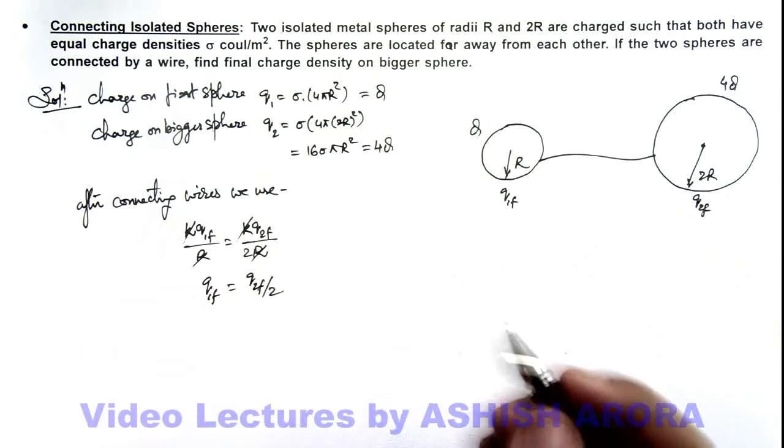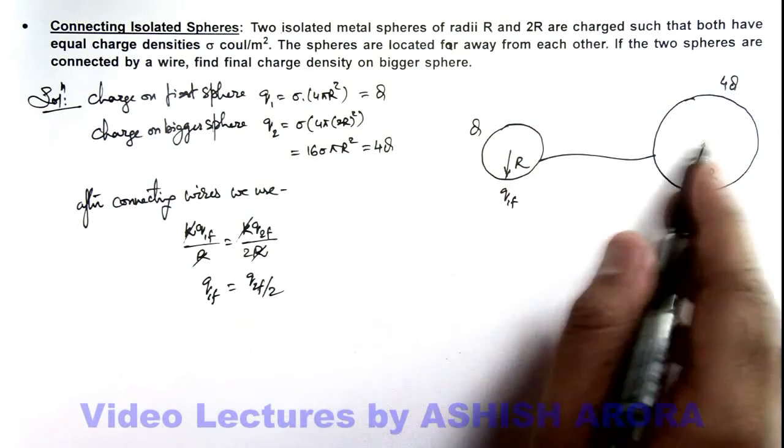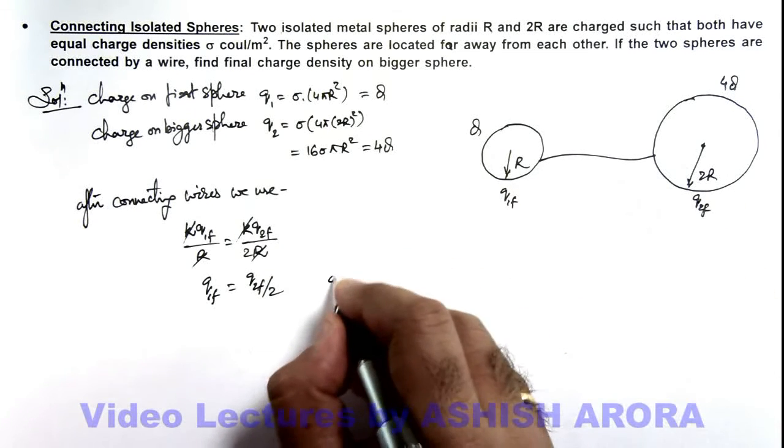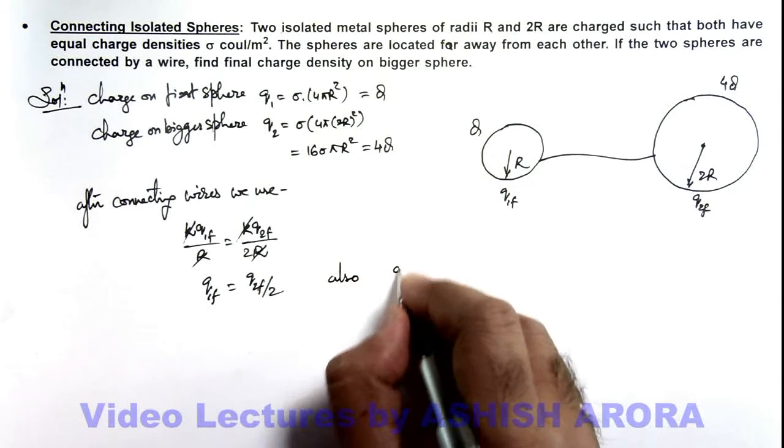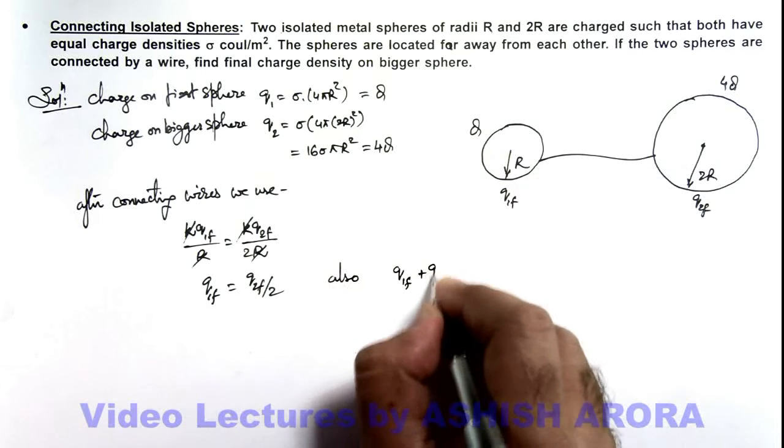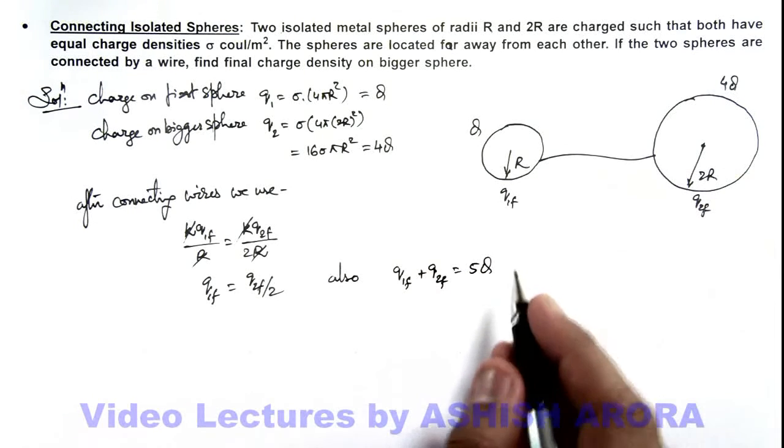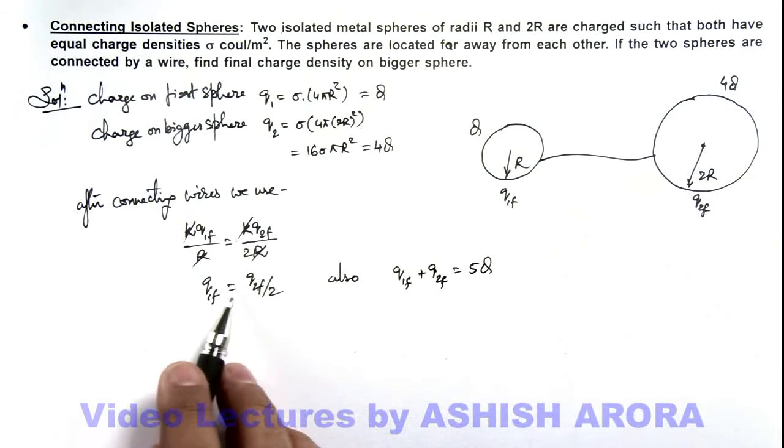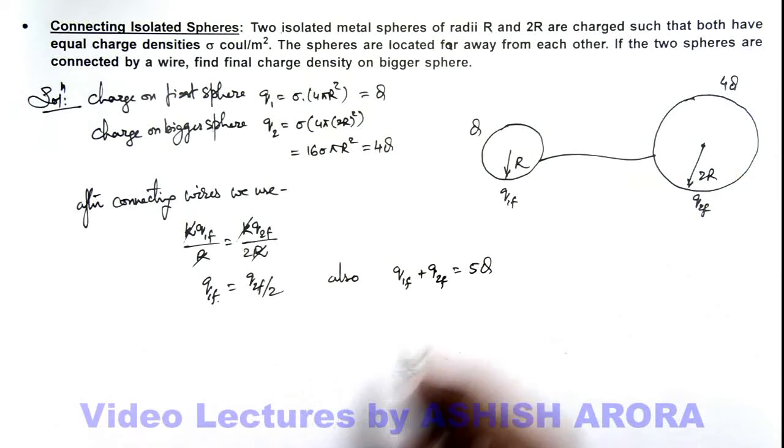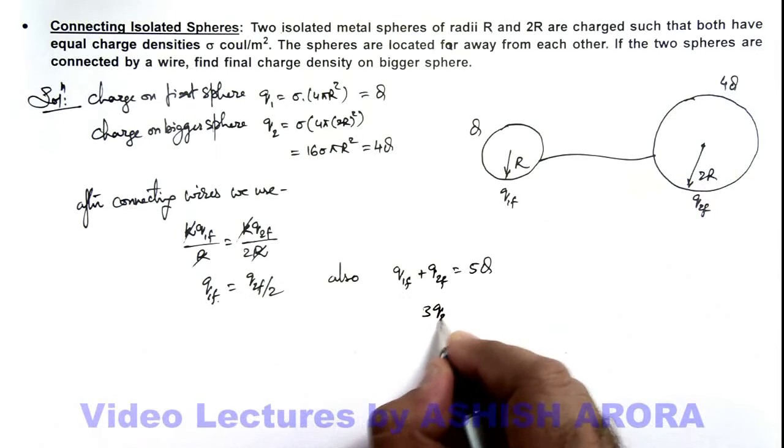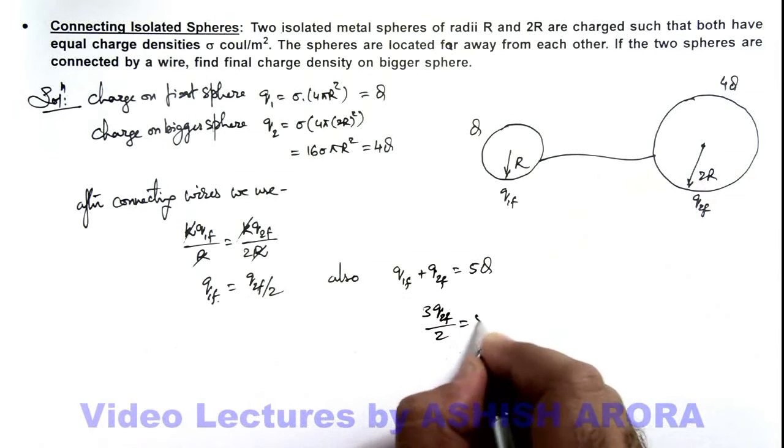And in parallel, as the total charge of the system remains conserved, we also use Q1final plus Q2final must equal 5Q, the total charge of the two spheres. If we substitute the value of Q1final as Q2final by 2, this is giving us 3Q2final by 2 equals 5Q.